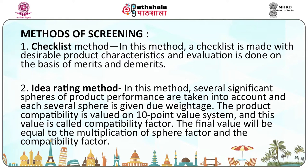There are various screening methods. The checklist method: a checklist is made with desirable product characteristics and the evaluation is done on the basis of merits and demerits. The idea rating method: several significant spheres of product performance are taken into account, each sphere is given a weight, and the product compatibility is valued on a 10-point value system called the compatibility factor. The final value equals the multiplication of the sphere factor and the compatibility factor.